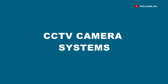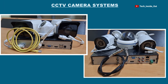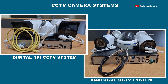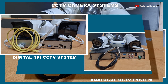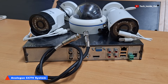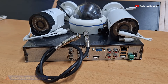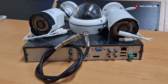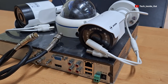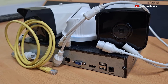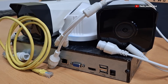Let's look at CCTV camera systems. There are two broad categories: analog CCTV camera systems and digital CCTV camera systems, which are also known as IP CCTV systems. Analog CCTV systems have evolved over time, and the latest technology of analog CCTV is what is called AHD, which stands for Analog High Definition CCTV. The systems shown here are AHD systems, and these other systems are examples of IP CCTV systems.